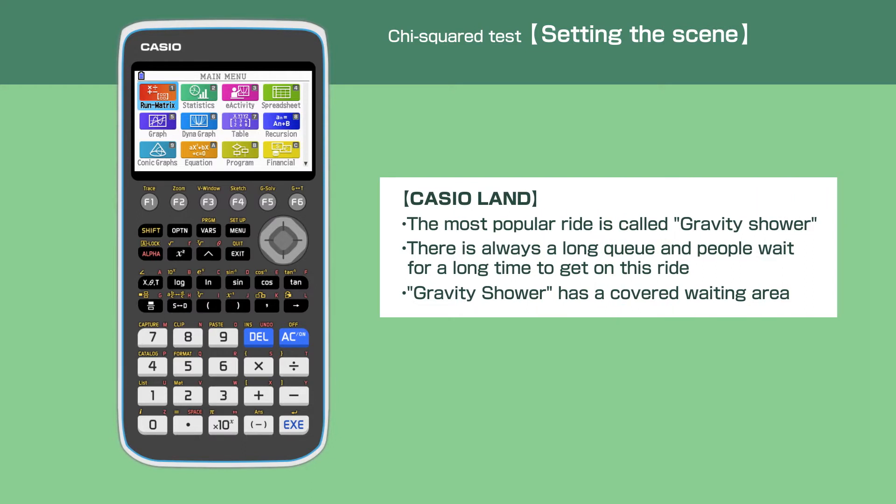The most popular ride is called Gravity Shower. There's always a long queue and people wait for a long time to get on this ride. Most rides in Casio Land are outside except Gravity Shower which has a covered waiting area.